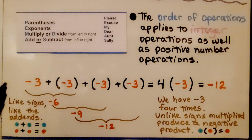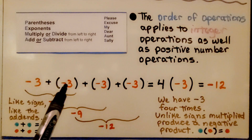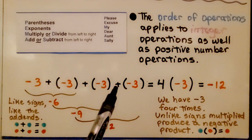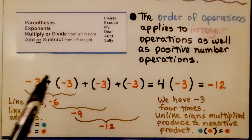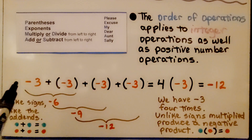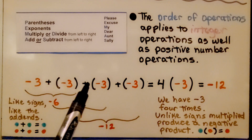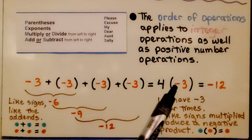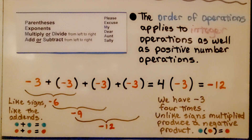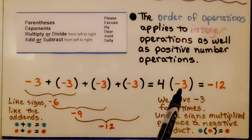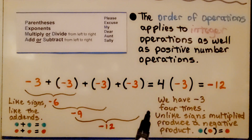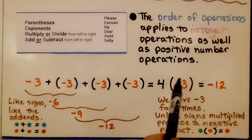Here we have negative 3 plus negative 3 plus negative 3 plus negative 3 — we have 4 negative 3's, which is 4 times negative 3. This is a positive 4 and a negative 3; they have unlike signs. If we multiply them, they'll produce a negative product. 4 times 3 is 12, so it's negative 12.